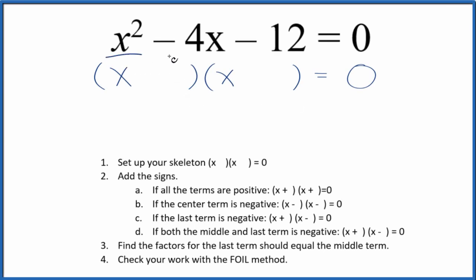Let's factor the equation x squared minus 4x minus 12 equals 0. What we'll do first is get a skeleton equation. This is our skeleton equation up here.